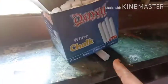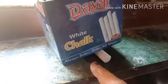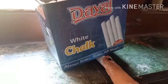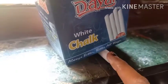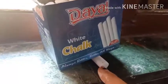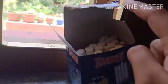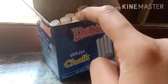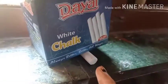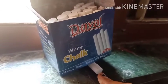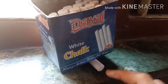Now I kept this chalk under the box — maine isko box ke niche rakh diya hai. So this chalk is now under the box. Pehle yeh oopar tha, phir yeh andar gaya, now it is under the box. First it was on the box, next it went inside the box, now it is under the box. This was the example to show you 'on', 'in', and 'under'.